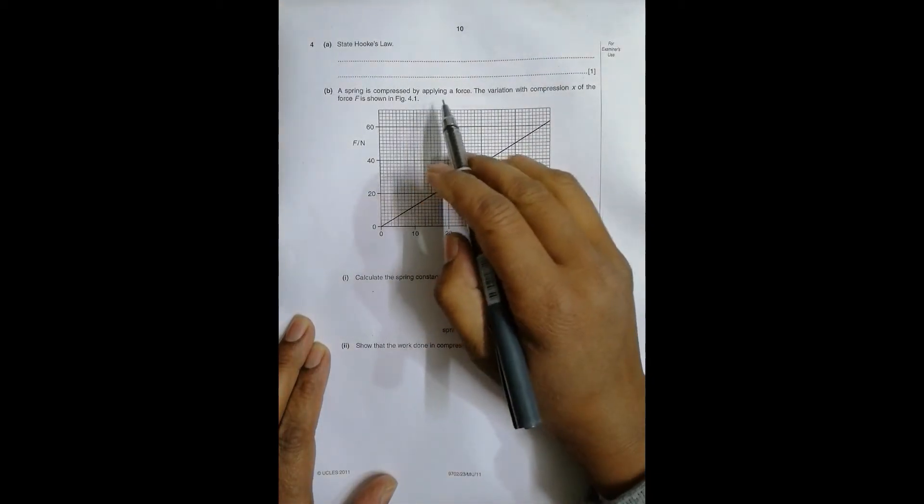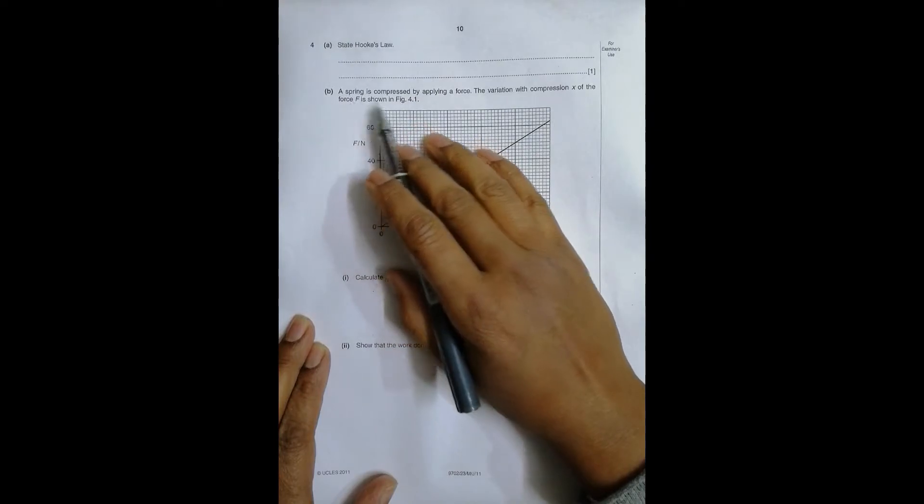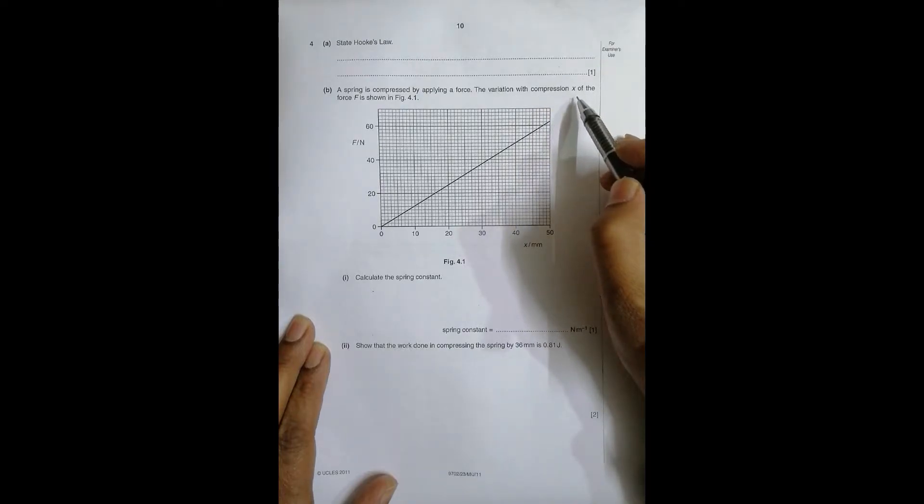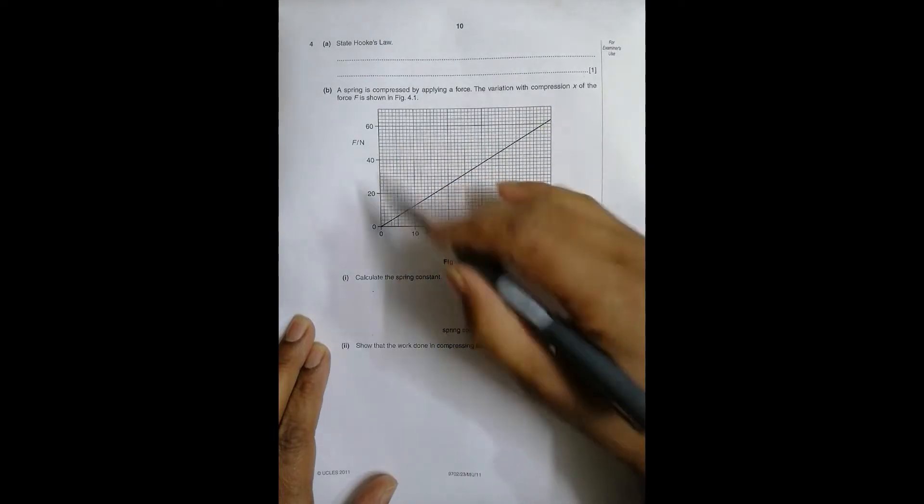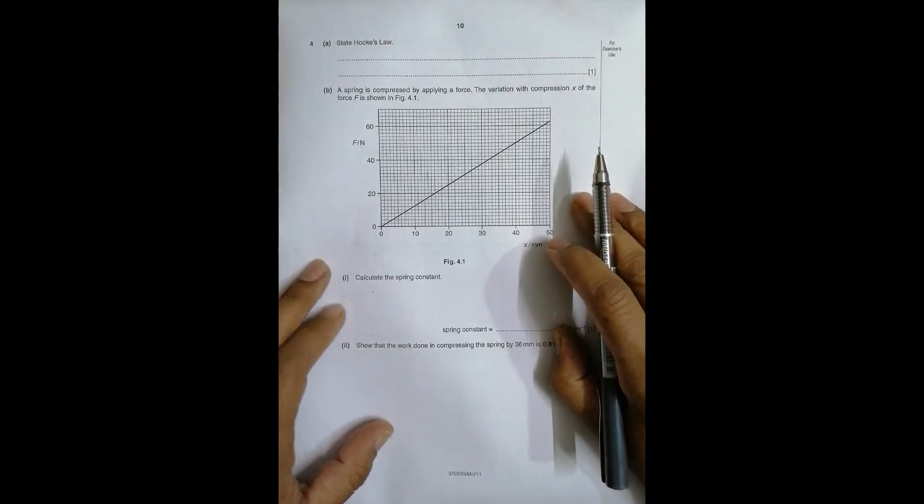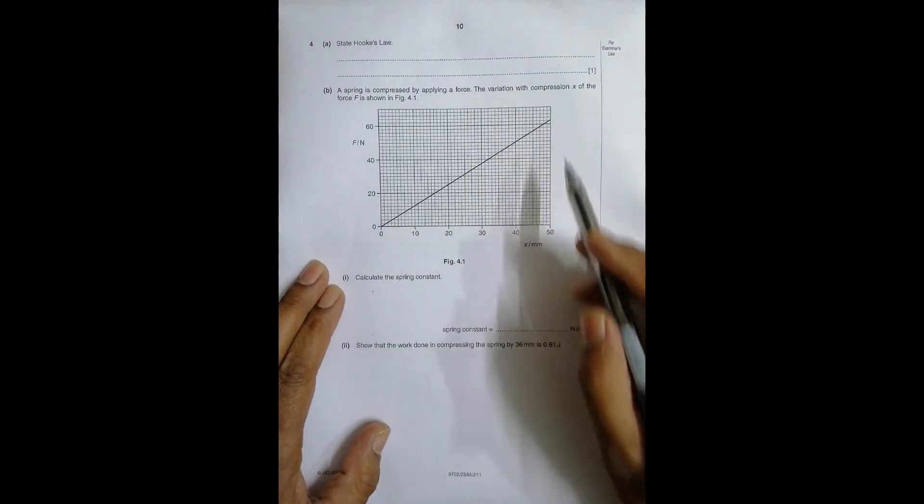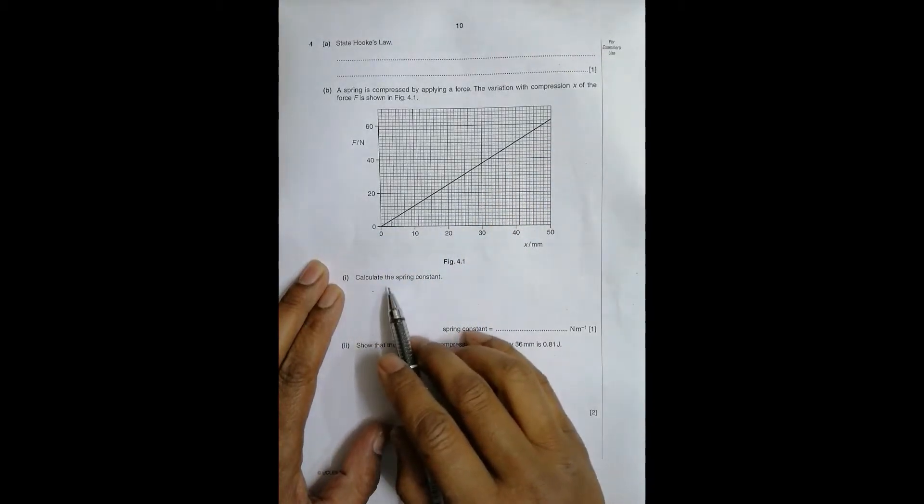Now number B: a spring is compressed by applying a force. The variation with the compression X of the force F is shown in this graph figure 4.1. So we can see at X=0 F is 0 and increases proportionally. Calculate the spring constant of this spring.